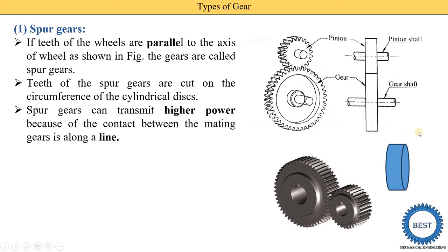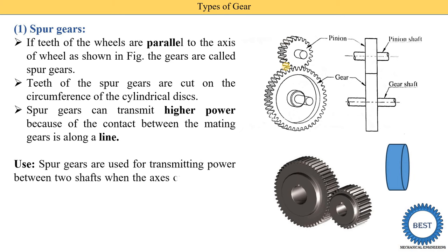Spur gear can transmit higher power because the contact between the mating gears is a line contact. When two spur gears come into contact, the mating surface has one line — there is line contact between the two teeth. Due to this line contact, spur gears are able to transmit higher power. In some gears when two teeth meet they give curvilinear or point contact; with point contact, lower power is transmitted. In spur gears, line contact allows transmission of higher power.